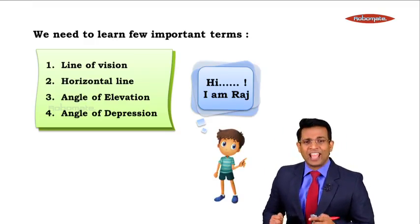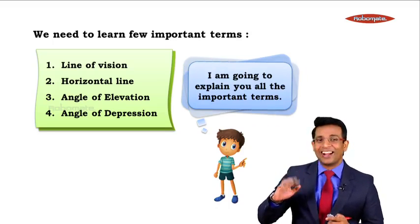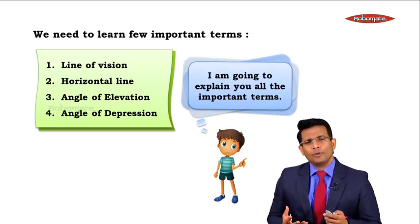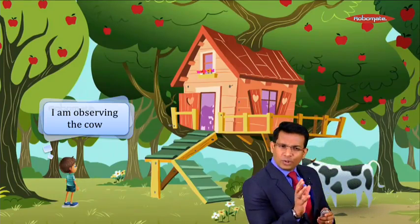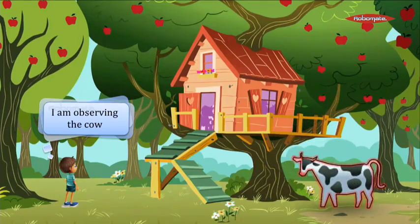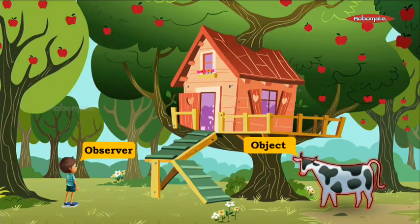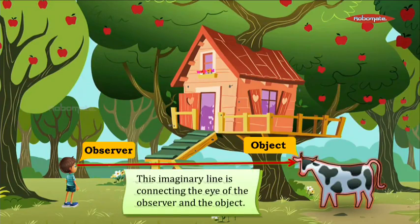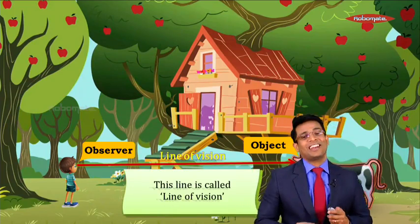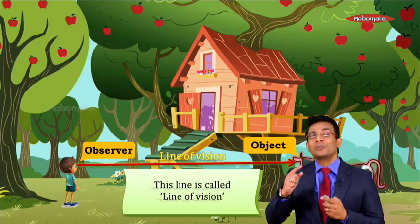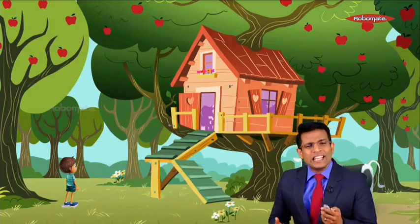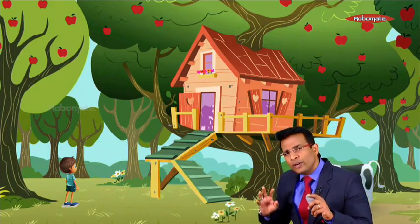Our friend Raj is going to help us understand all four terms. Here, Raj is observing a cow. Raj is the observer and the cow is the object. The imaginary straight line connecting the eye of the observer to the object is called the line of vision. So whenever an observer observes an object, that straight line from his eye to the object is called the line of vision.